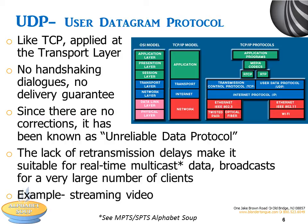TCP corresponds to the transport layer of the OSI model, whereas IP corresponds to the network layer. Now that we've seen the TCP/IP model, we can see how UDP and RTP fit into an IP network. UDP is similar to TCP, but without the guarantee of delivery. Both are applied at the transport layer. With UDP, computer applications can send messages to other hosts on an IP network without prior communications to set up special transmission channels or data paths. It has no handshaking dialogues. By not requiring acknowledgments of packet receipt, retransmission of data, and packet ordering, UDP has a lower overhead and can be faster. But data can definitely be lost. It exposes the unreliability of the underlying network protocol to the user's program. Since this is normally over an unreliable IP media, there are no guarantees. UDP is suitable for purposes where error checking and correction is either not necessary or is performed in the application, avoiding the overhead of such processing at the network interface level.